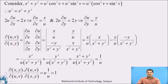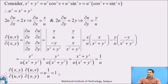Now consider the required product: Jacobian of xy with respect to uv multiplied by Jacobian of uv with respect to xy equals u × (1/u) = 1. Hence proved.